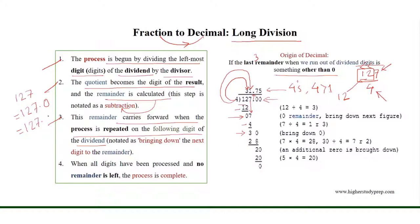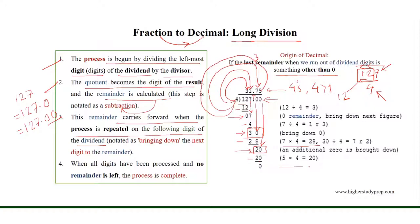Adding 0 placeholders will not change the value of a number; therefore 127.0 is equal to 127.00. Now we can bring down the 0 to get 30. 4 will go 7 times into 30, and 4 times 7 equals 28. Therefore the subtraction 30 minus 28 results in remainder 2. We bring down an additional 0 to get 20, and 4 will go 5 times into 20, as 5 times 4 equals 20, and 20 minus 20 results in 0. When all digits have been processed and no remainder is left, the process is complete. Thus the fraction 127 over 4 is equal to the decimal 31.75.